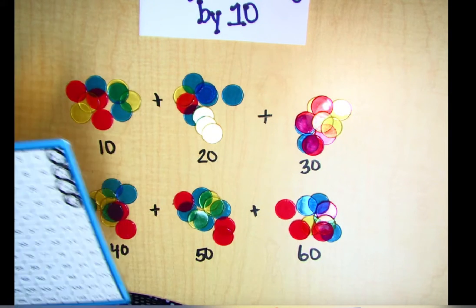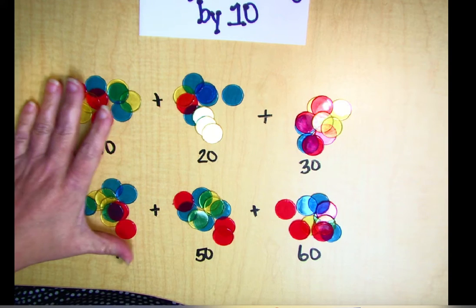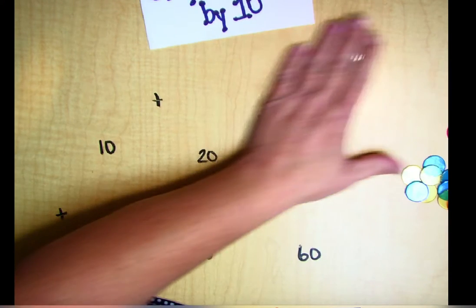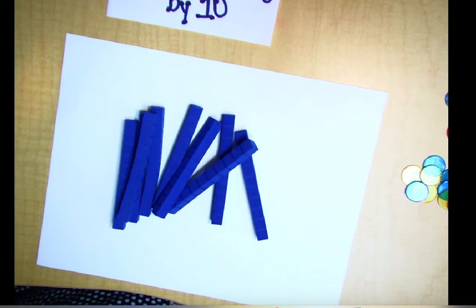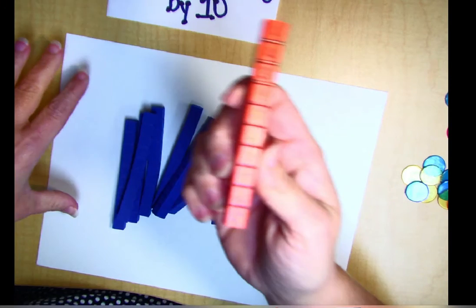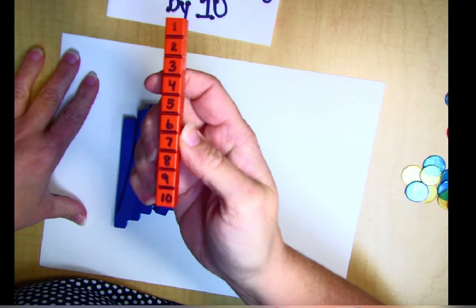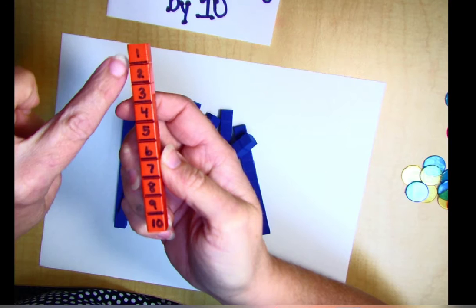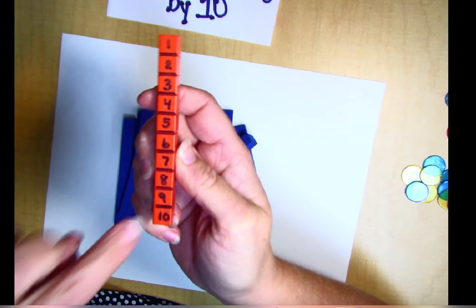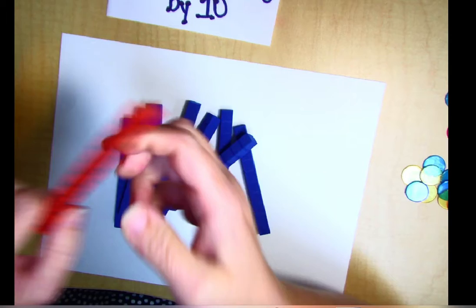Now another way that we can count by 10s to larger numbers is we can use these 10 sticks. Now you've probably seen these before. They're base 10 blocks. This is one that I've drawn on. You can see that it is 10 individual blocks. So this whole stick is worth 10. It's kind of like a $10 bill.